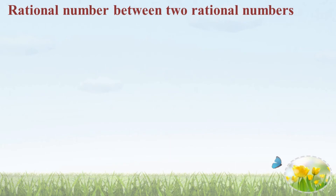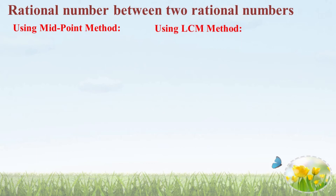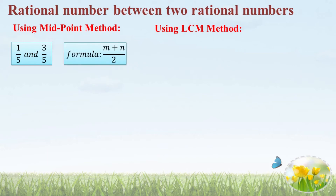You have to find a rational number between two rational numbers. There are two methods: the first one is using the midpoint method and the second one is using LCM. First, we find using the midpoint method. The rational numbers are 1 by 5 and 3 by 5. The formula is M plus N by 2, where M and N are rational numbers.